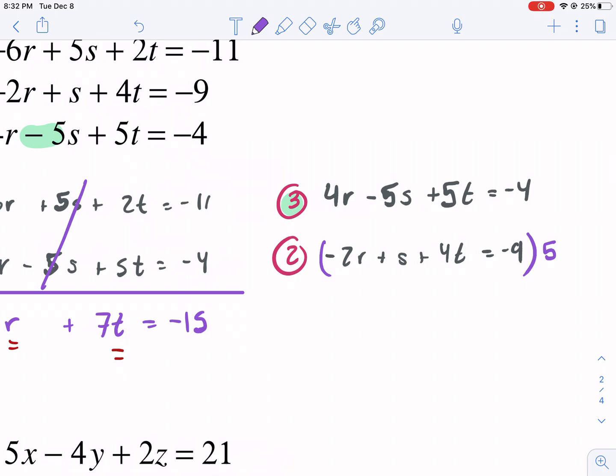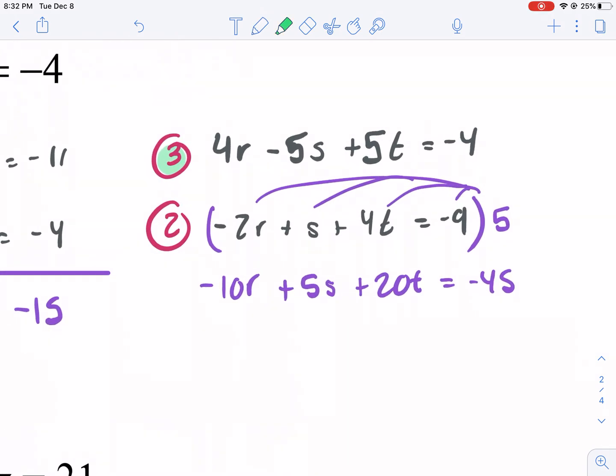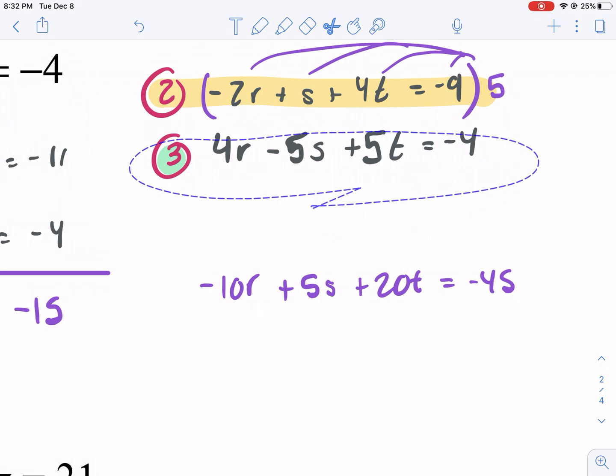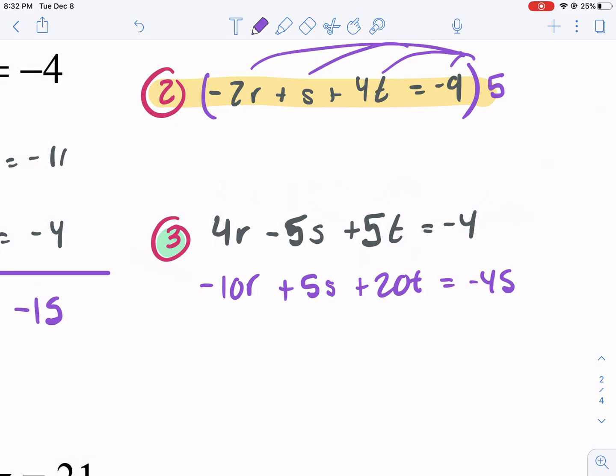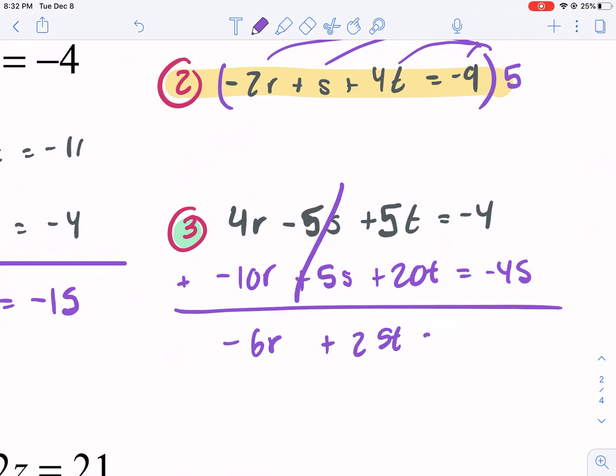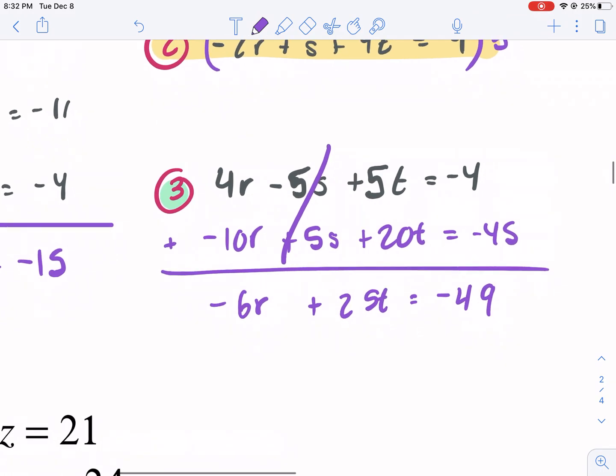Okay. So I got to multiply this by positive five. Now let's rewrite this equation as negative 10 R plus five S plus 20 T equals negative 45. Okay. Now I'm ready to add. I'm going to move them so you guys can see this a little bit better. Okay. So now I'm going to combine these two and add. I get negative six R, this cancels. That's the whole point. We have to eliminate the same variable in both, plus 25 T equals negative 49. Okay. So this is my second star.